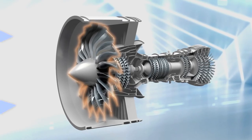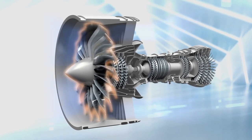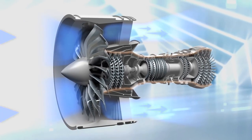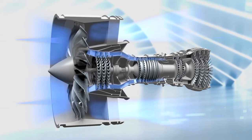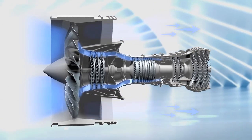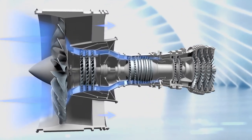A big fan at the front of the engine pulls air around the engine and sucks air into the core. We'll come back to that outside air in a moment. For now, let's follow the air in the core.